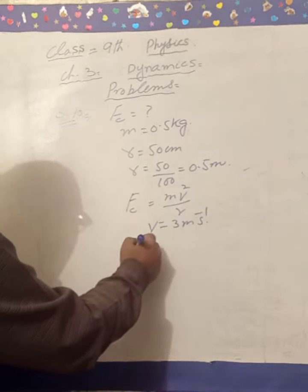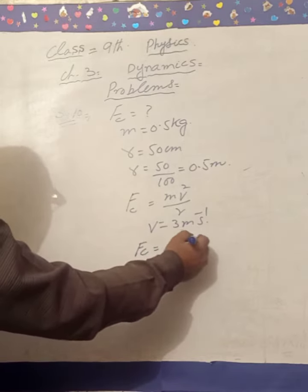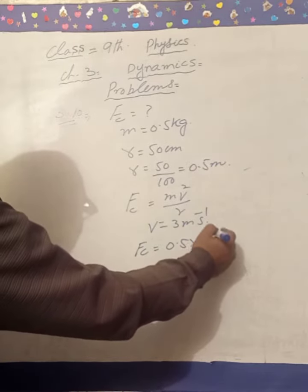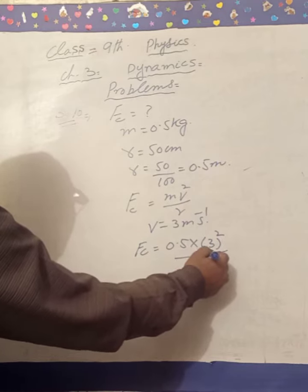Now substitute into the formula. F is equal to m value is 0.5, v value is 3 squared, over r is equal to 0.5.